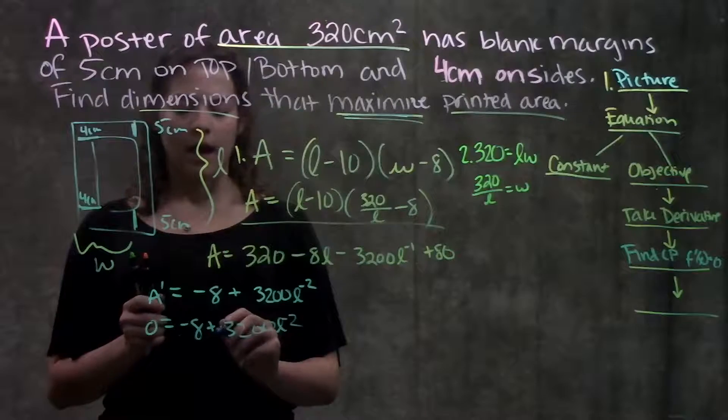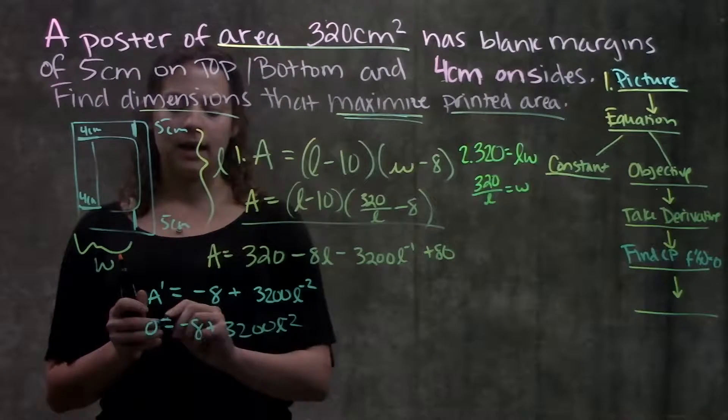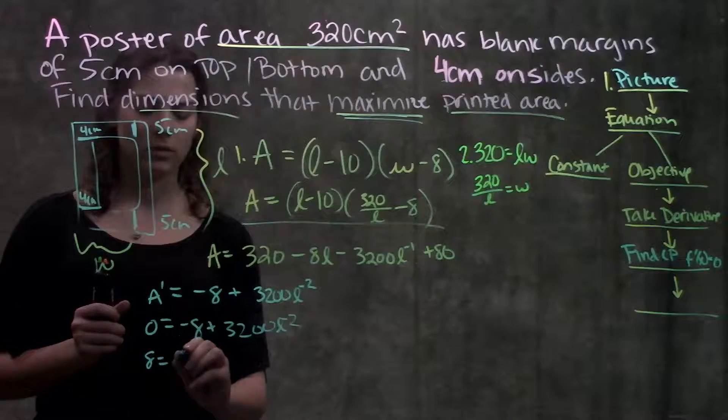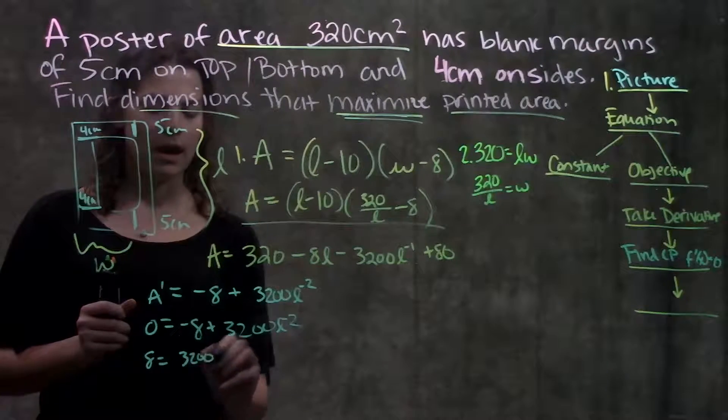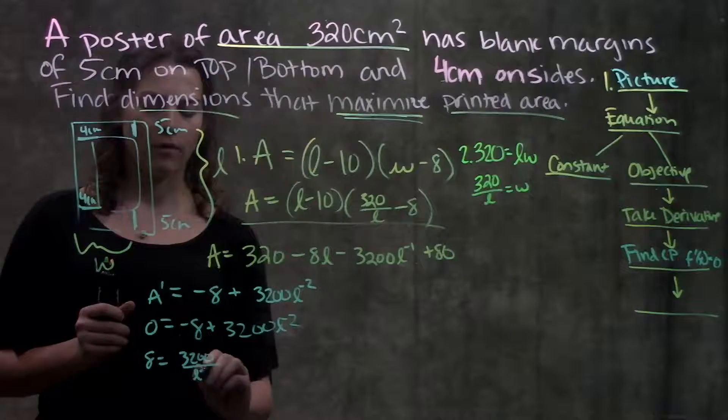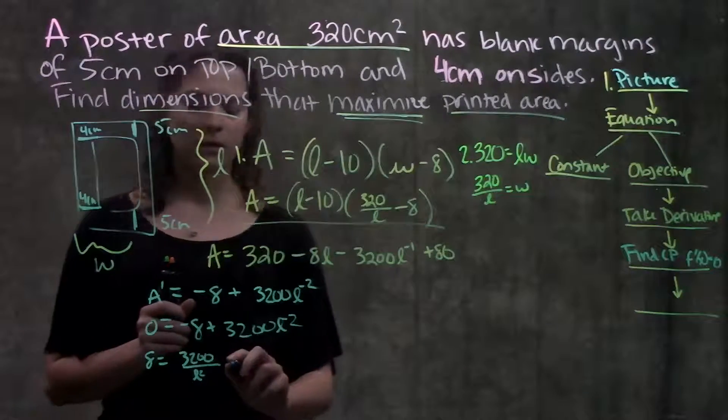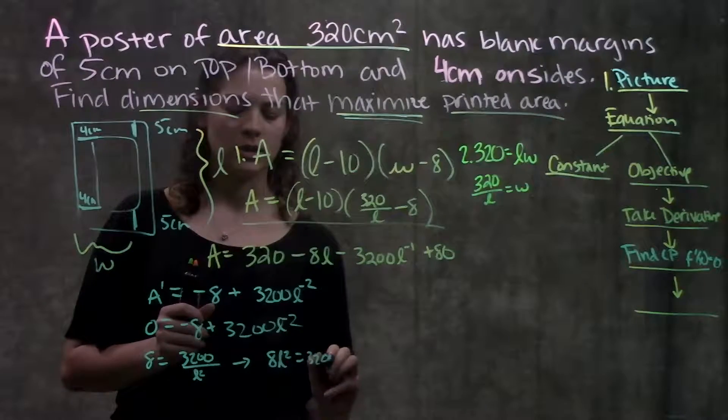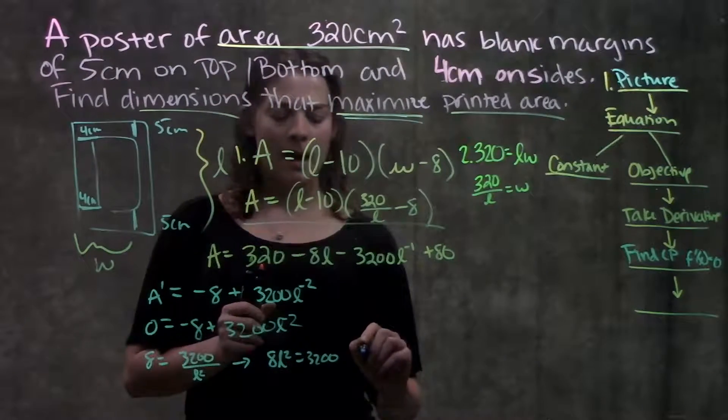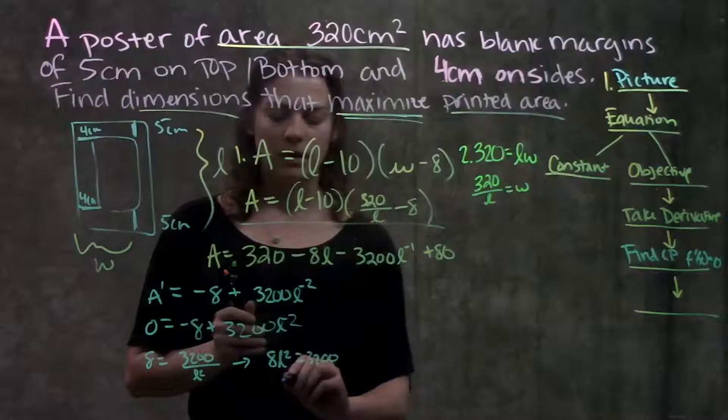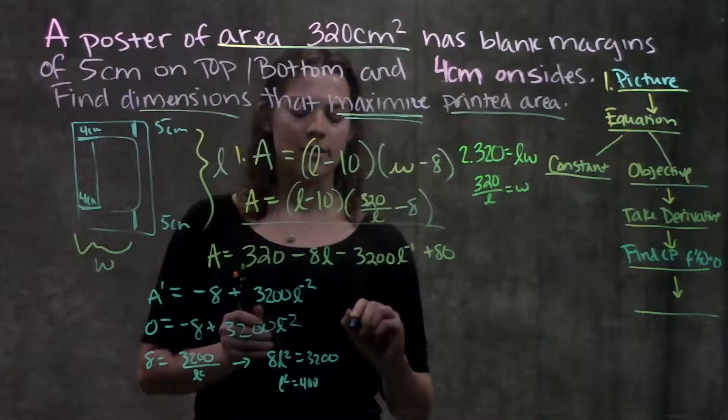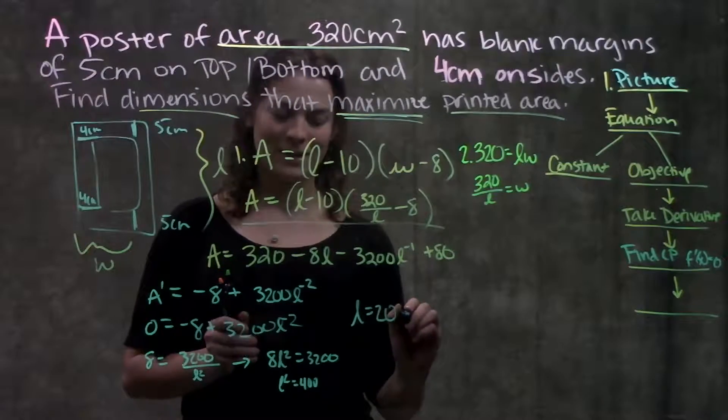When I solve for L, let's see, I can add this over to the other side, and this becomes 8 is equal to 3200, I'm going to bring this back down to the bottom, over L squared. Multiply L squared over, get 8 L squared is equal to 3200. Divide by 8, and I get 400 equals L squared. And when you take the square root, you get that L is equal to 20 centimeters.